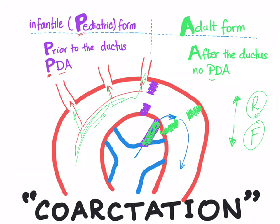If you apply a blood pressure cuff on the arm of the patient, you will measure a high blood pressure. However, if you apply it to the leg of the patient and measure the blood pressure, it will be a lower value. This discrepancy is important.